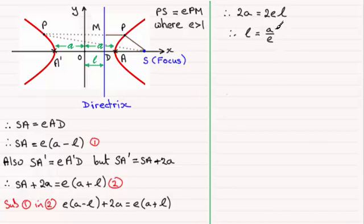So if L equals A over E, it follows from this then that the directrix has equation X equals A over E.